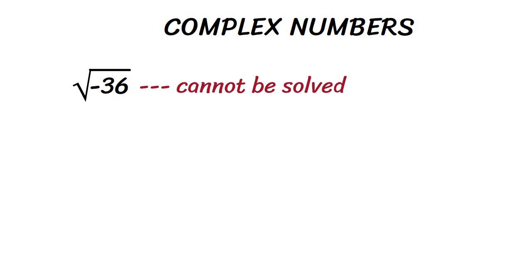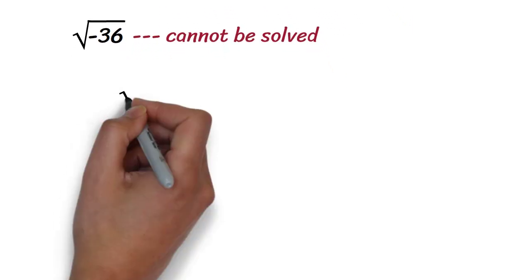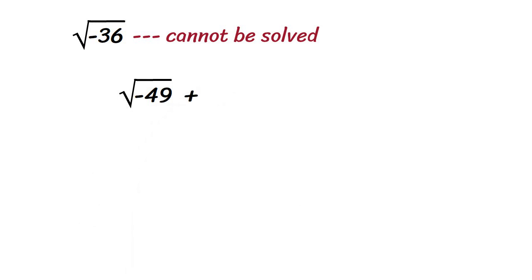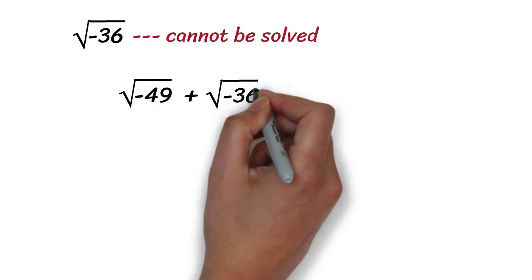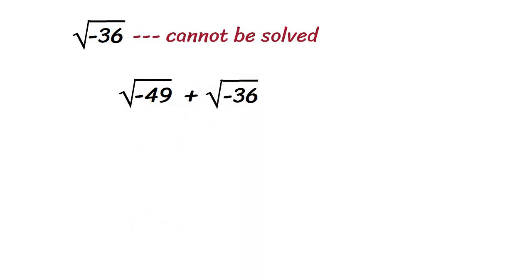This problem becomes even more important when we look at operations on these numbers, like square root of negative 49 plus square root of negative 36. To solve this problem, the idea of the imaginary number was introduced.